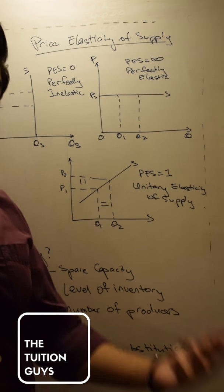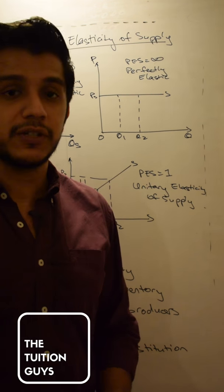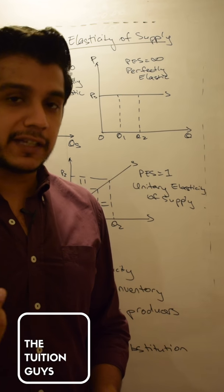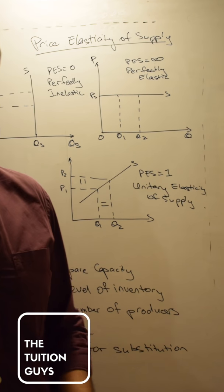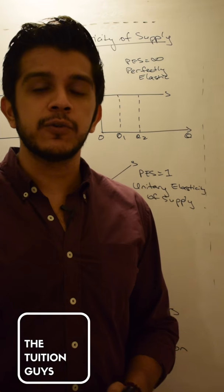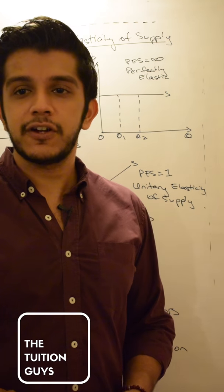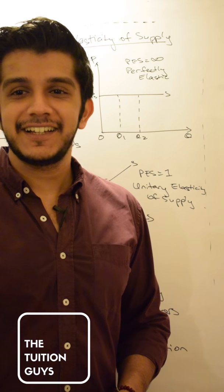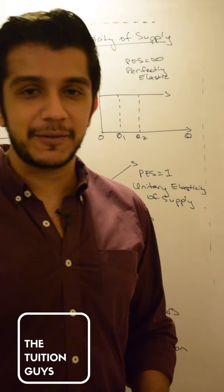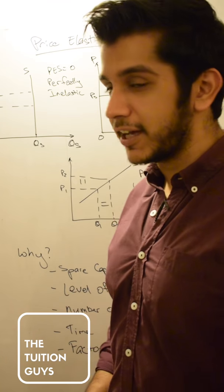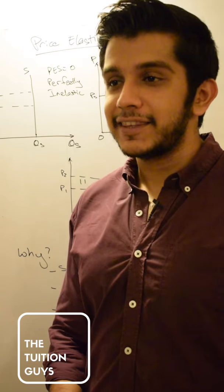Number of producers: how many producers are there who make Kokomo? If there's only one producer making Kokomo—which actually I think is Colson, but if there's only one producer making Kokomo, then quantity supplied cannot increase immediately unless they have spare capacity or inventory.